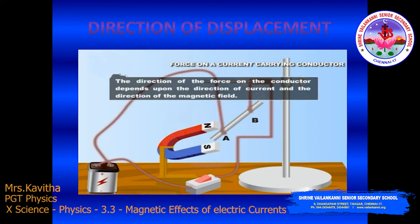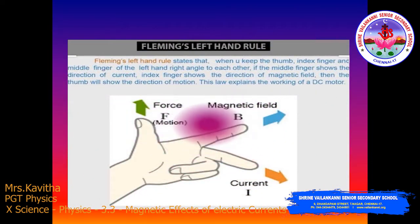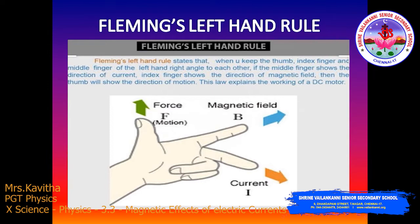The direction of force acting on the conductor can be found by Fleming's left hand rule. Fleming's left hand rule states that when you keep the thumb, index finger, and middle finger of the left hand at right angles to each other — if the middle finger shows the direction of the current, the index finger shows the direction of the magnetic field, then the thumb will show the direction of the motion. This rule explains the working of a DC motor, which we can see in the next session.